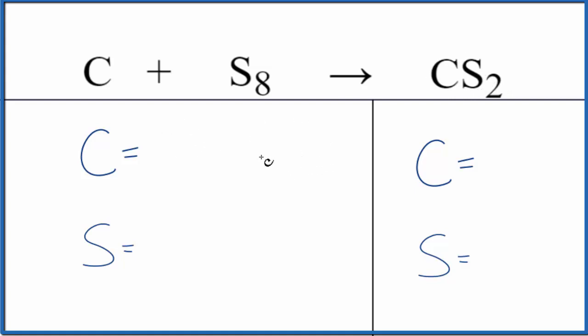The first thing we need to do is count the atoms up. We have one carbon and eight of these sulfur atoms in the reactants. In the products we have one carbon and two sulfur atoms.